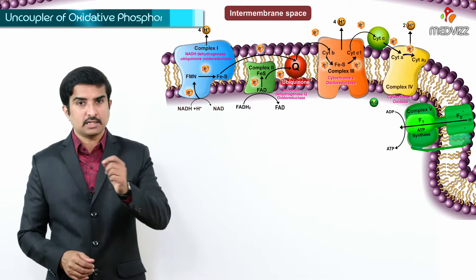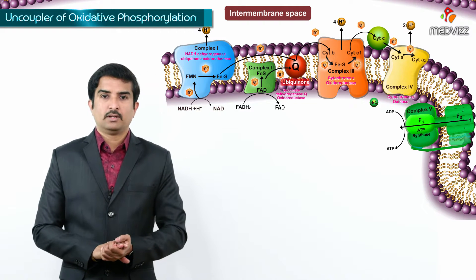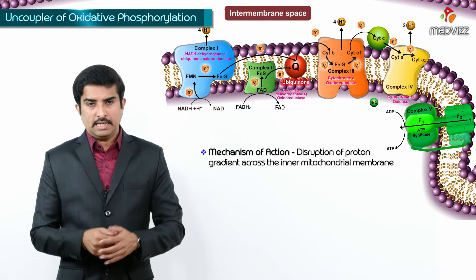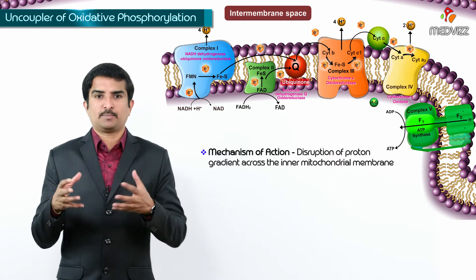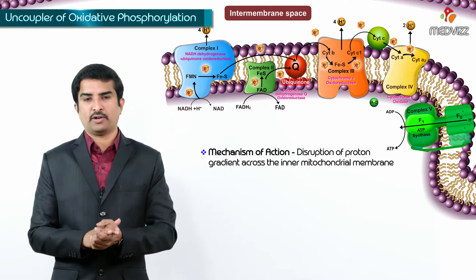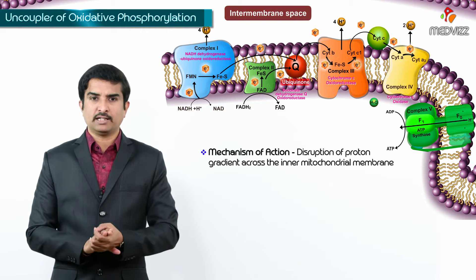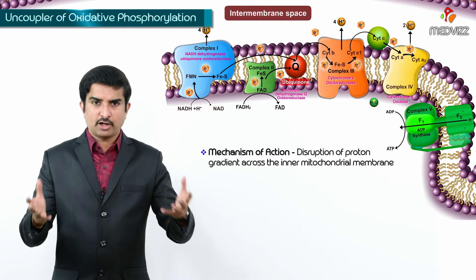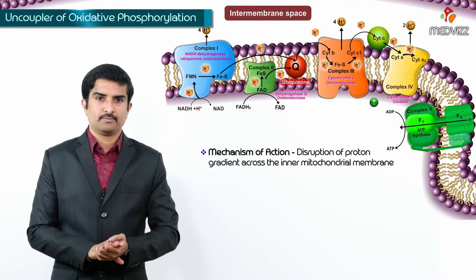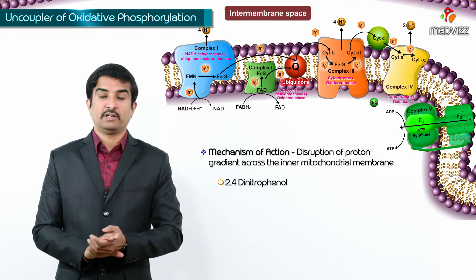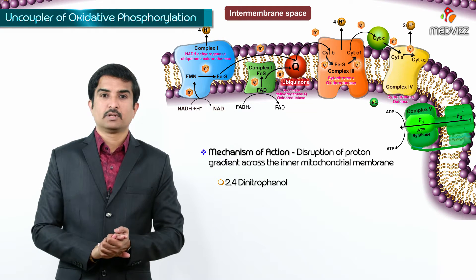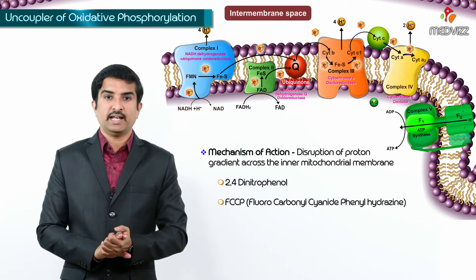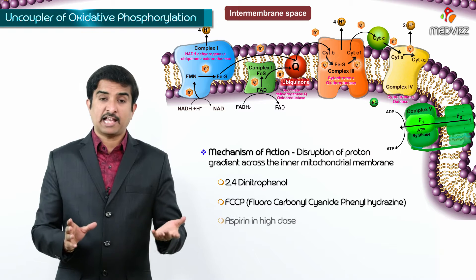Uncouplers of oxidative phosphorylation act by disrupting the proton gradient across the inner mitochondrial membrane — they disrupt the electrochemical gradient. Examples include 2,4-dinitrophenol (2,4-DNP) and FCCP (fluorocarbonyl cyanide phenylhydrazone).